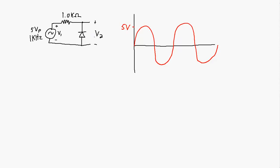So what's happening in this circuit? During the positive half of the cycle, this diode is going to be reverse biased, which means no current will be flowing. Therefore there is no voltage drop across this one kilohm resistor, so the voltage probes measuring at the top and bottom are going to measure the full voltage swing. The output signal V2 is going to be exactly the same as the input.